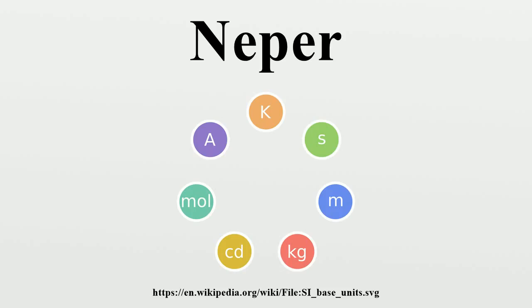As is the case for the decibel and bell, the Neper is a unit of the International System of Quantities, but not part of the International System of Units. However, it is accepted for use alongside the SI. Like the decibel, the Neper is a unit in a logarithmic scale.